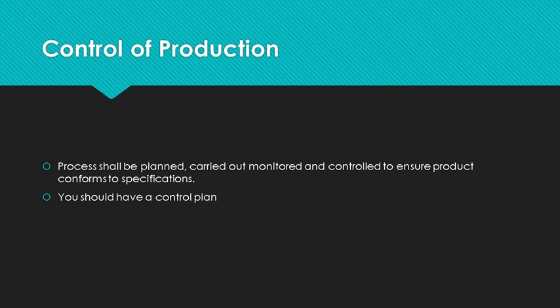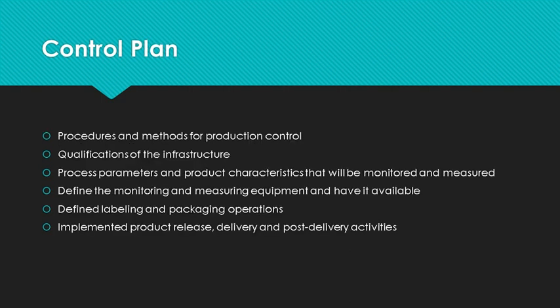Production must be planned and controlled to ensure product meets specifications. If product is run on multiple presses of different sizes, there must be a planned set of parameters to follow ensuring product meets specification no matter where you run it. The easiest way to do this is with a control plan.